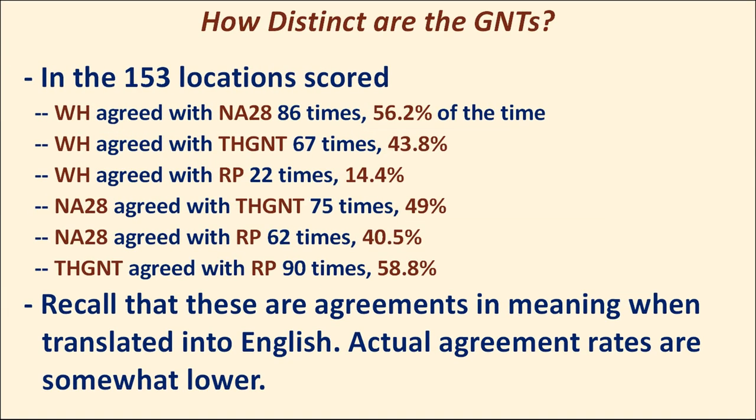First I examined the different Greek New Testaments to see how they agreed with each other in those 153 locations. Westcott and Hort agreed with NA28 56.2% of the time, with Tyndale House 43.8%, and with Robinson-Pierpont only 14.4% of the time. Nestle-Aland agreed with Robinson-Pierpont 40.5% of the time — almost three times as frequently as Westcott and Hort did. So Nestle-Aland 28th edition is not the same thing as Westcott and Hort.